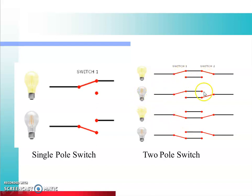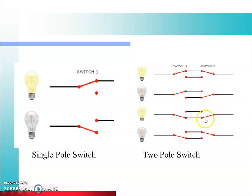Jab switch one aur switch two dono ek particular position mein rahenge to lamp glow karega, kyunki isse ek close path milta hai aur current ko flow hone ke liye ek proper path milta hai. Usi tarah agar hamne switch ka position change kiya aur circuit mein continuous current ke flow ko ek continuous path nahi mil raha hai, to lamp glow nahi hooga — yeh ho gaye alag-alag cases.